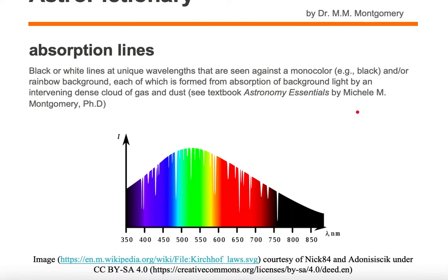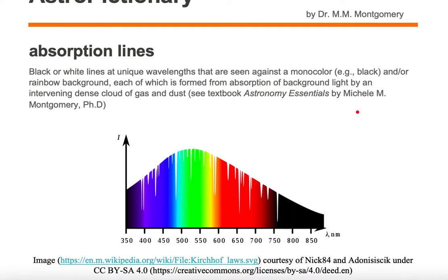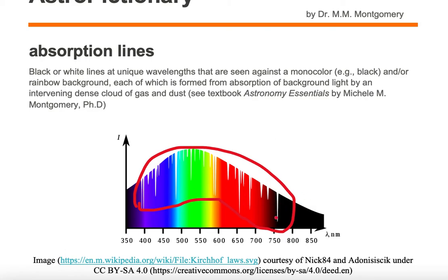Let's take a look at these absorption lines. The absorption lines are seen as white against this colored background or against this black background. Each of these white lines is at a unique wavelength.